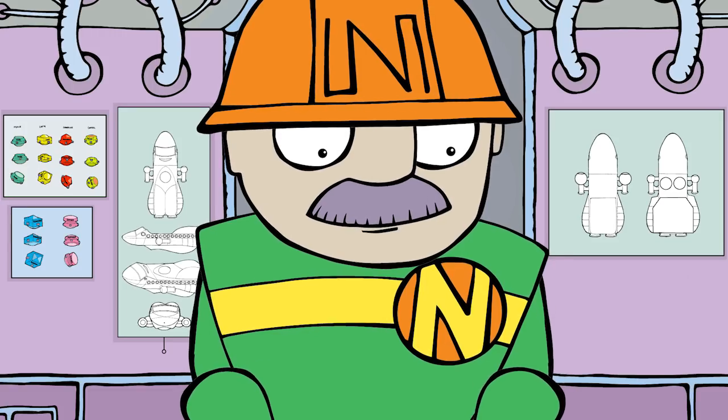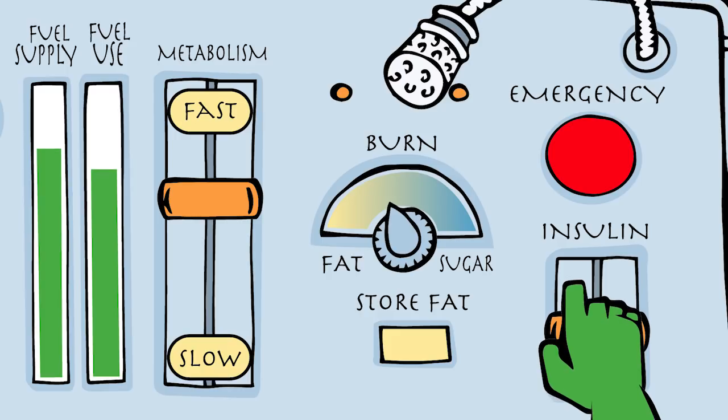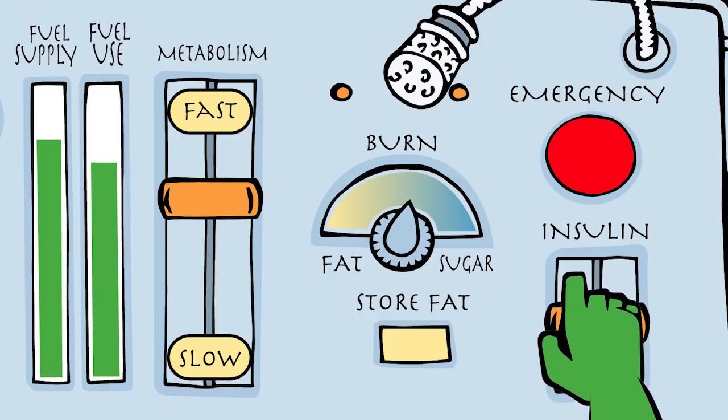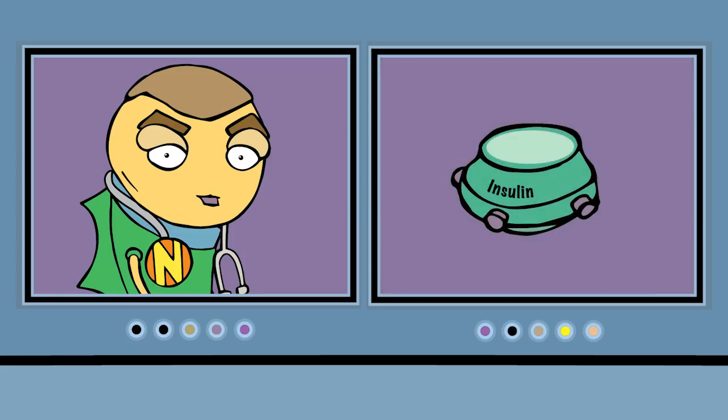To accomplish that task, Marty releases a hormone called insulin. Dr. Fishbones can explain what insulin does. To put it simply, Captain, insulin's job is to push nutrients into cells.